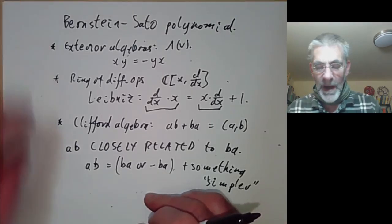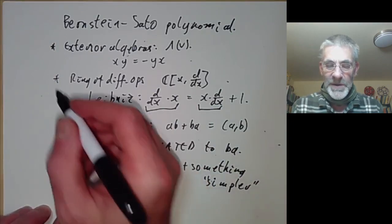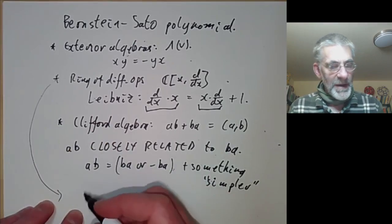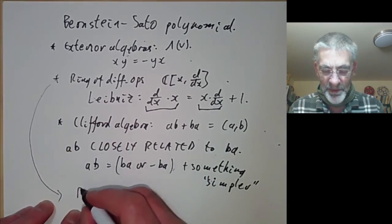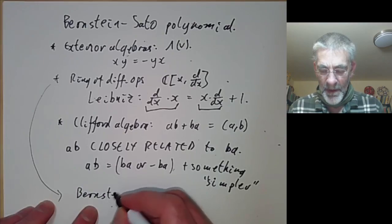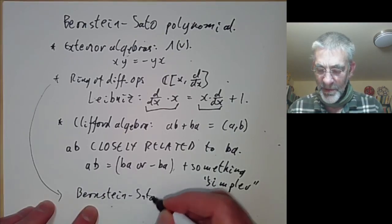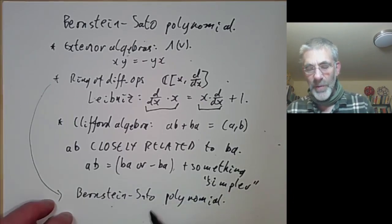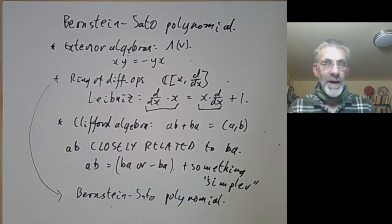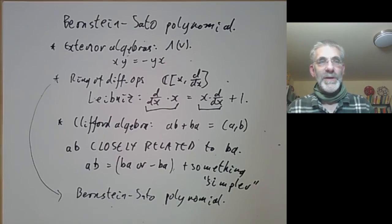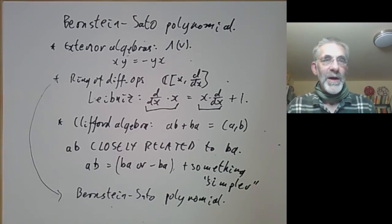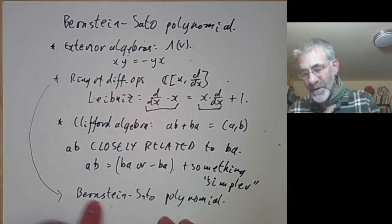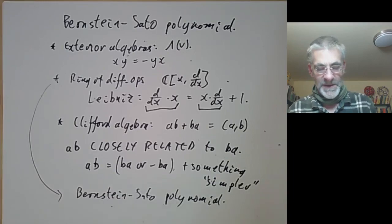I'm going to give an application of this where we use the ring of differential operators to show the existence of something called the Bernstein-Sato polynomial. If you look up Bernstein polynomial, there are actually two totally unrelated things called the Bernstein polynomial — one used in numerical analysis, which is absolutely nothing to do with this one. They're named after different Bernsteins.